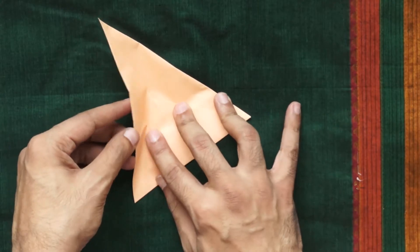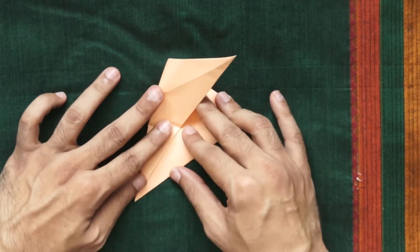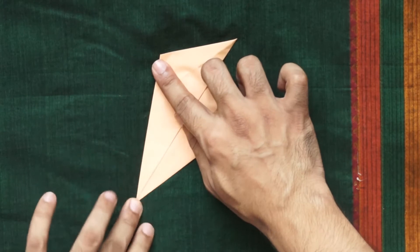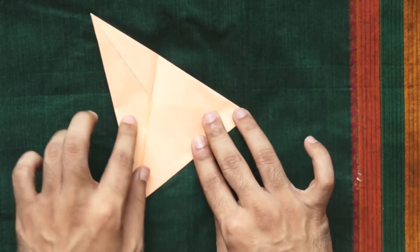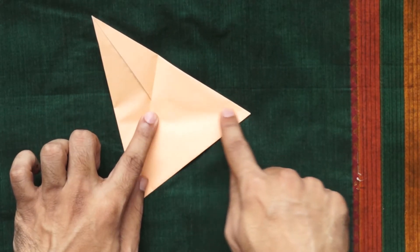Fold the entire thing along one of the top slanting edges of the base triangular shape. Unfold and repeat along the opposite edge.